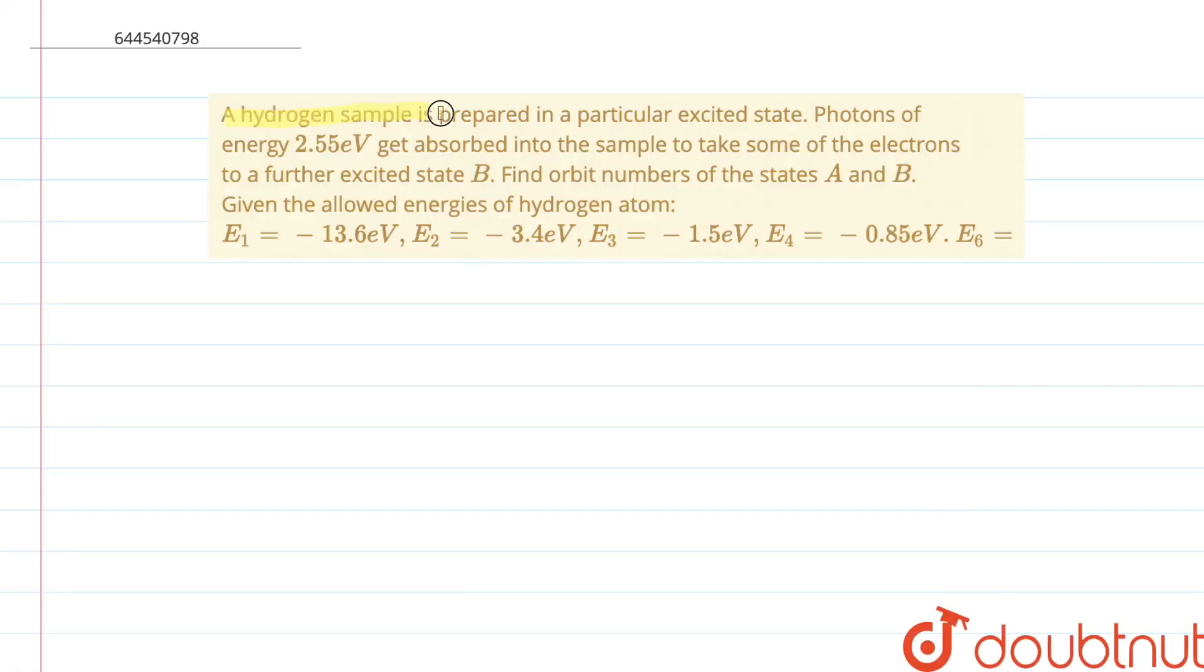A hydrogen sample is prepared in a particular excited state. Photons of energy 2.55 electron volts get absorbed into the sample to take some of the electrons to a further excited state B. Find the orbit number of states A and B.